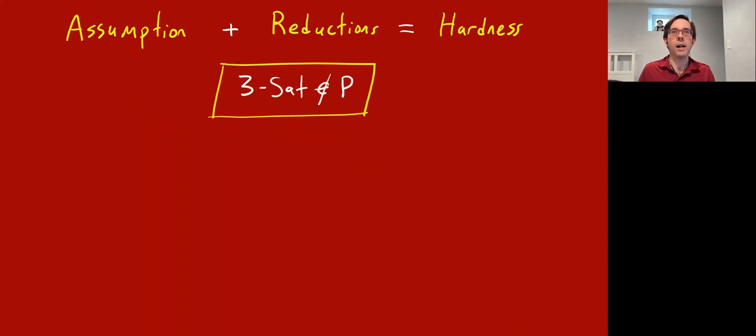So as I said, the gold standard hardness assumption in CS theory, since we cannot prove anything, we have to pursue something, is the assumption that P does not equal NP. As you well know, thanks to the Cook-Levin theorem, this is equivalent to the assumption that 3SAT doesn't have a polynomial time algorithm. This assumption has been around for 50 years, and it's the baseline assumption that we're always willing to make in order to get started.